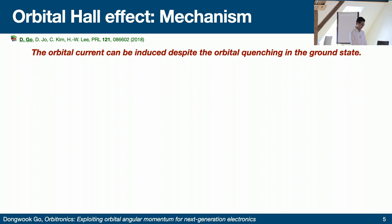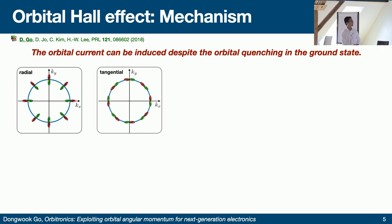Orbital quenching is an effect that many people talk about, but it's actually not so well-defined. In work we did in 2018, we showed that we can in fact induce very large orbital current efficiently by an external electric field, even when there is orbital quenching in the ground state. Surprisingly, we found that the interaction responsible for the orbital quenching — the crystal field potential — is the very one that generates the orbital current.